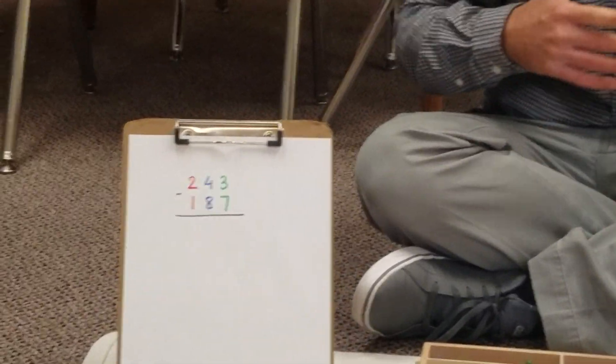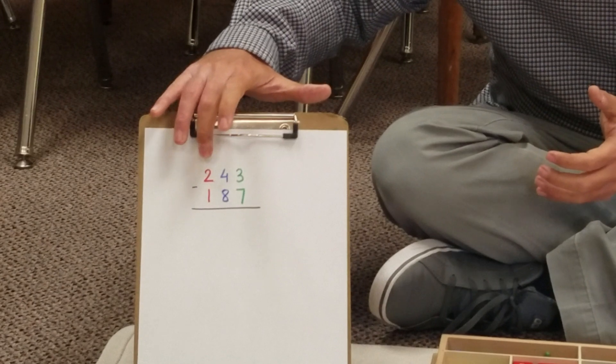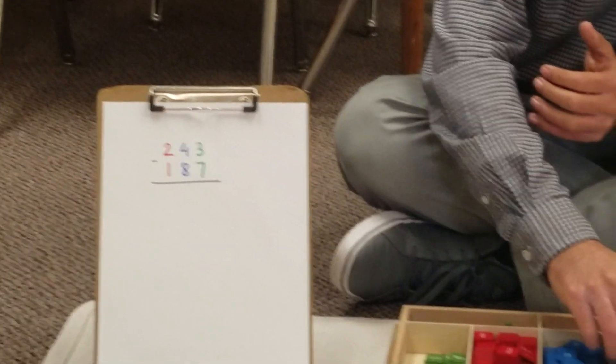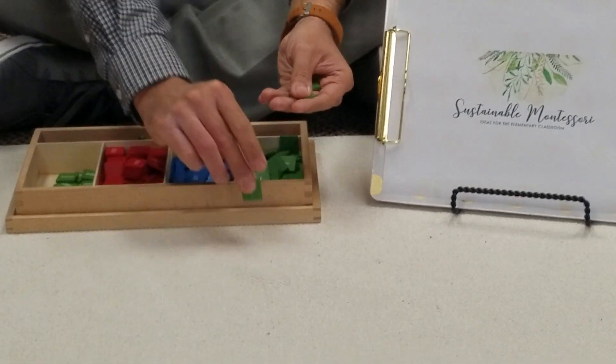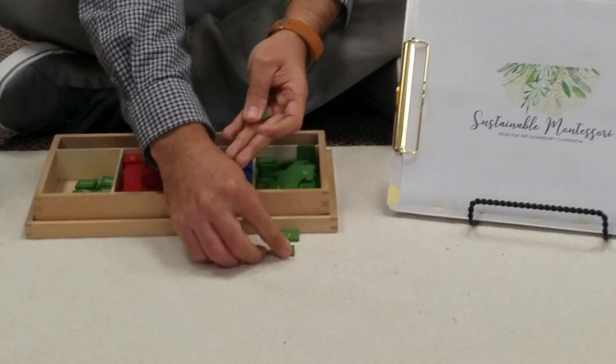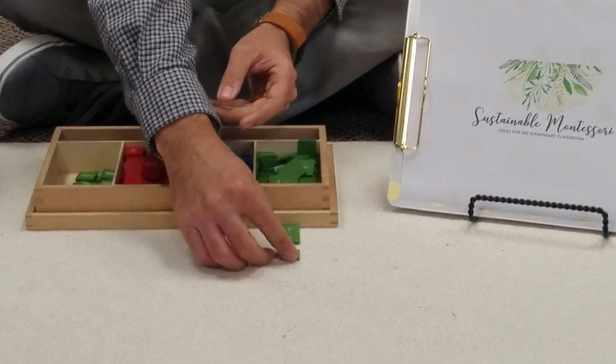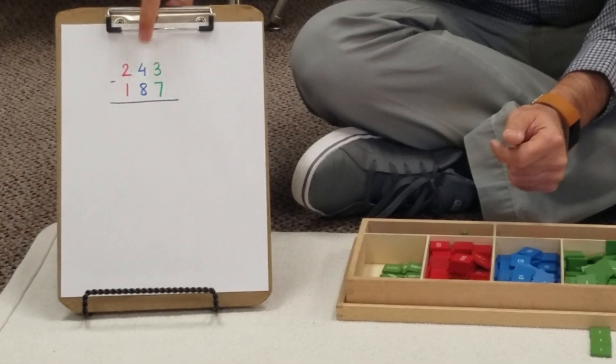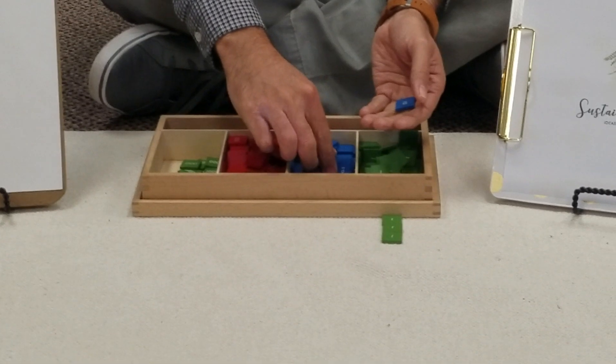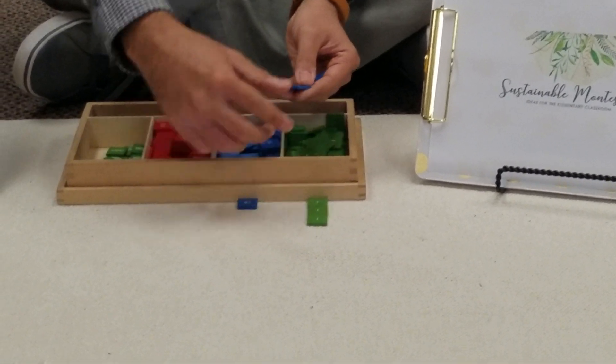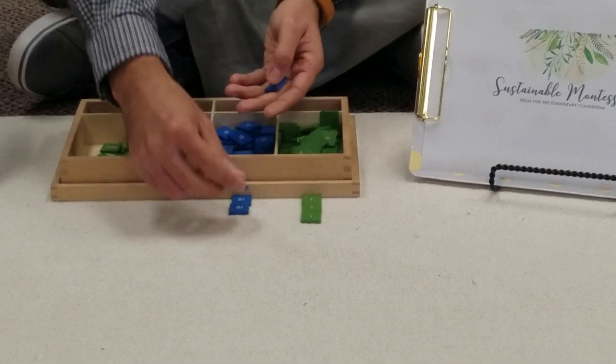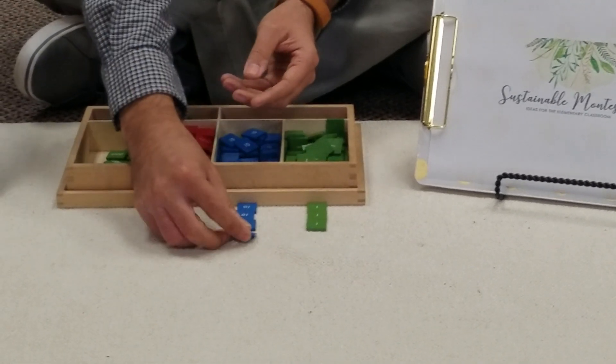We have our number here, our minuend, and it's good to go introducing those terms to them. It's 243, so we have three units. Minuend, they always like the word the minuend because of the movie. Then we have four tens, two, three and four tens.